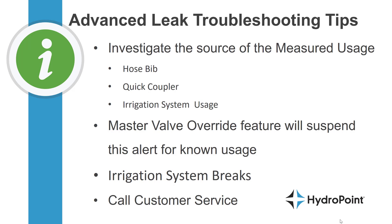If you determine it wasn't normal usage that caused the advanced leak alert, carefully walk your irrigation system looking for breaks along the pressurized main, or valves that might have come on or stuck on during non-irrigation hours. For more help troubleshooting your advanced leak alert, contact our customer service team.